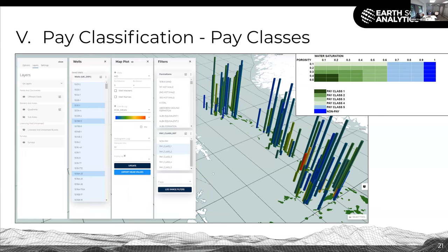Now we can go towards pay classification. We have our mean porosity and mean water saturation curves. We have set up pay classes based upon our water saturation cutoffs and our porosity cutoffs. We have pay class one, two, three, and four where we have hydrocarbons, and pay class five and non-pay are predominantly water-saturated intervals.